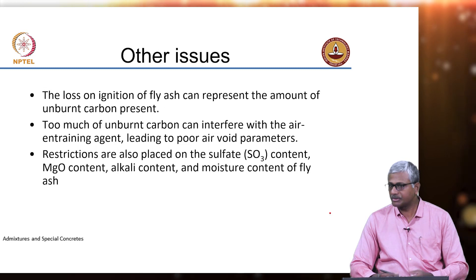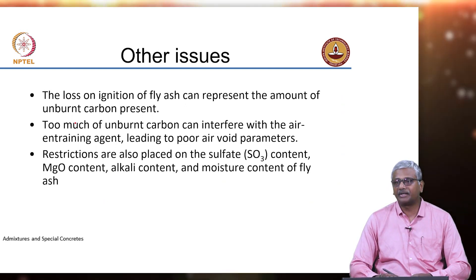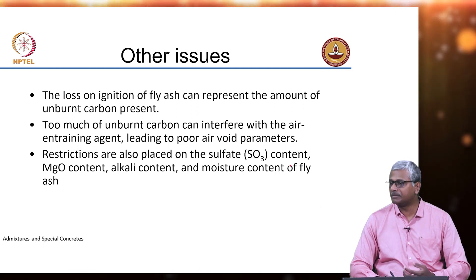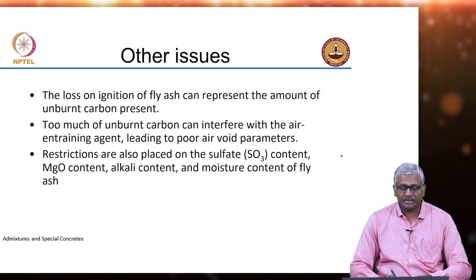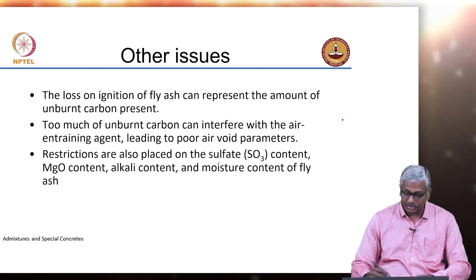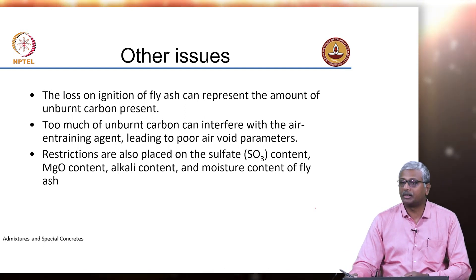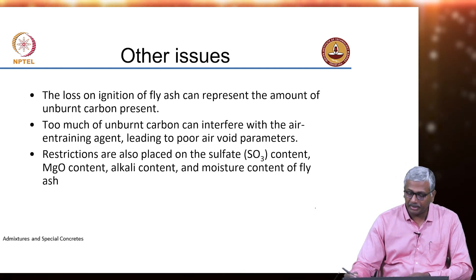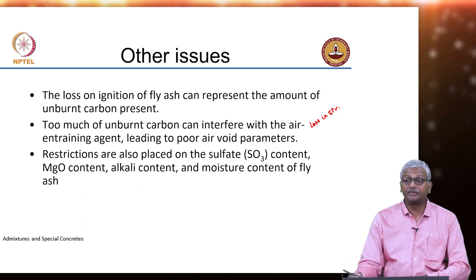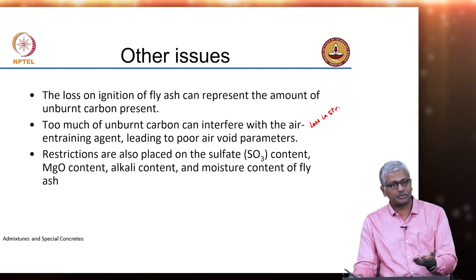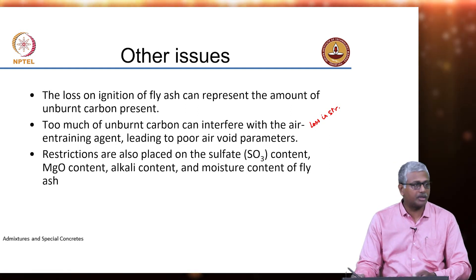Unburnt carbon could be present in fly ash because lighter particles of coal can fly off along with the fly ash and get collected with it, and this probably leads the fly ash to have a distinctly blackish coloration. This unburnt carbon needs to be removed or kept within a certain range. If you do not do that, it can interfere with air void parameters and lead to poor performance of the air entraining agent — more air entrainer may be required to produce the same extent of air. There is also a loss in strength associated with excess carbon, and discoloration can happen. Carbon is very light, so when you place the concrete, it can come up to the surface and cause discoloration, which is generally not accepted from a quality perspective.